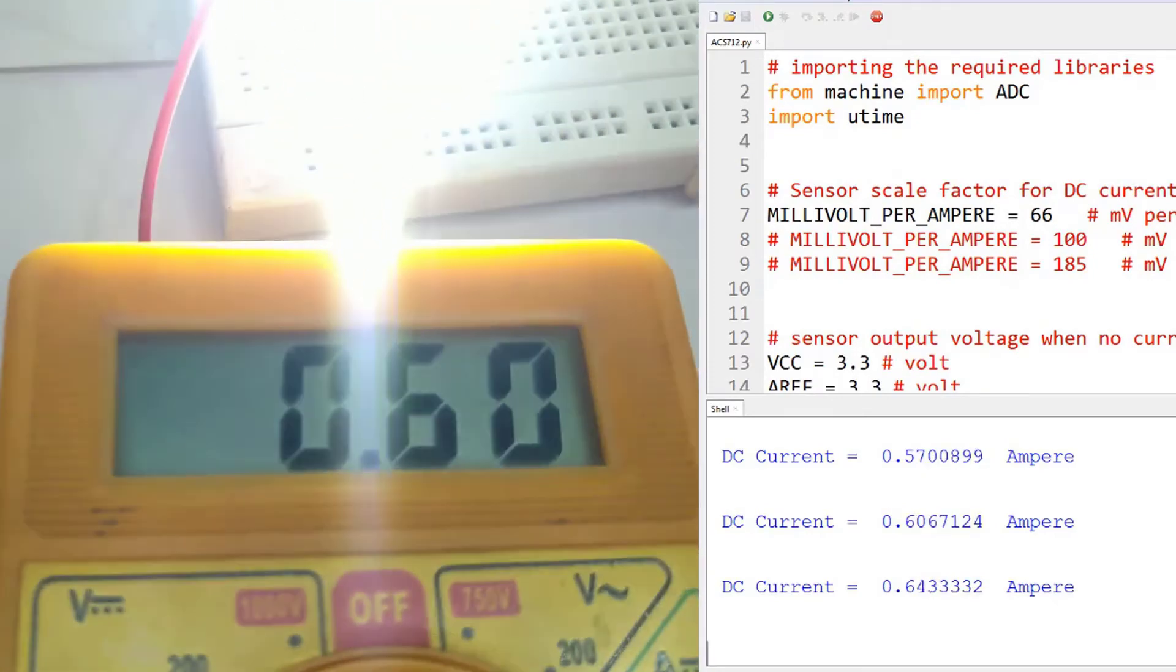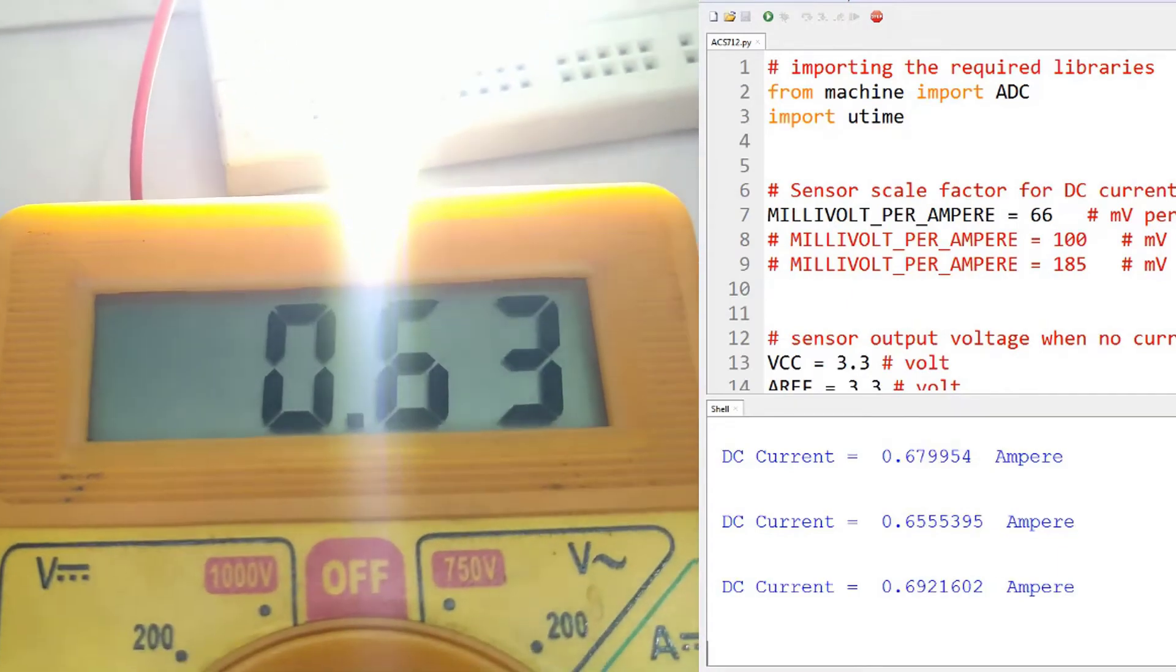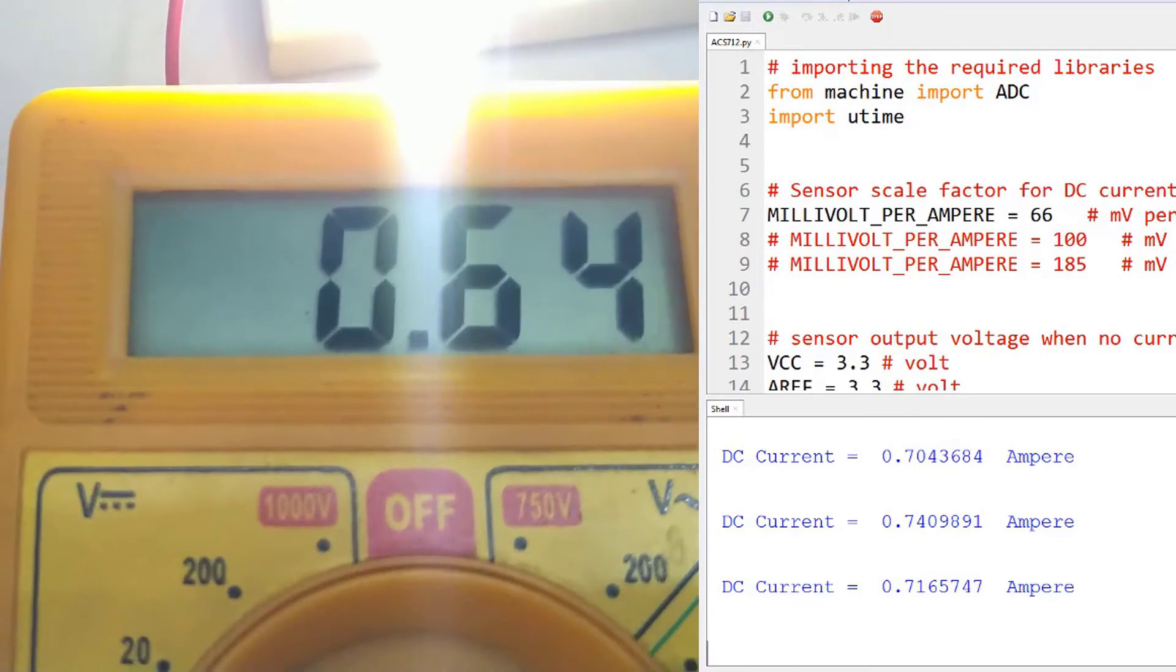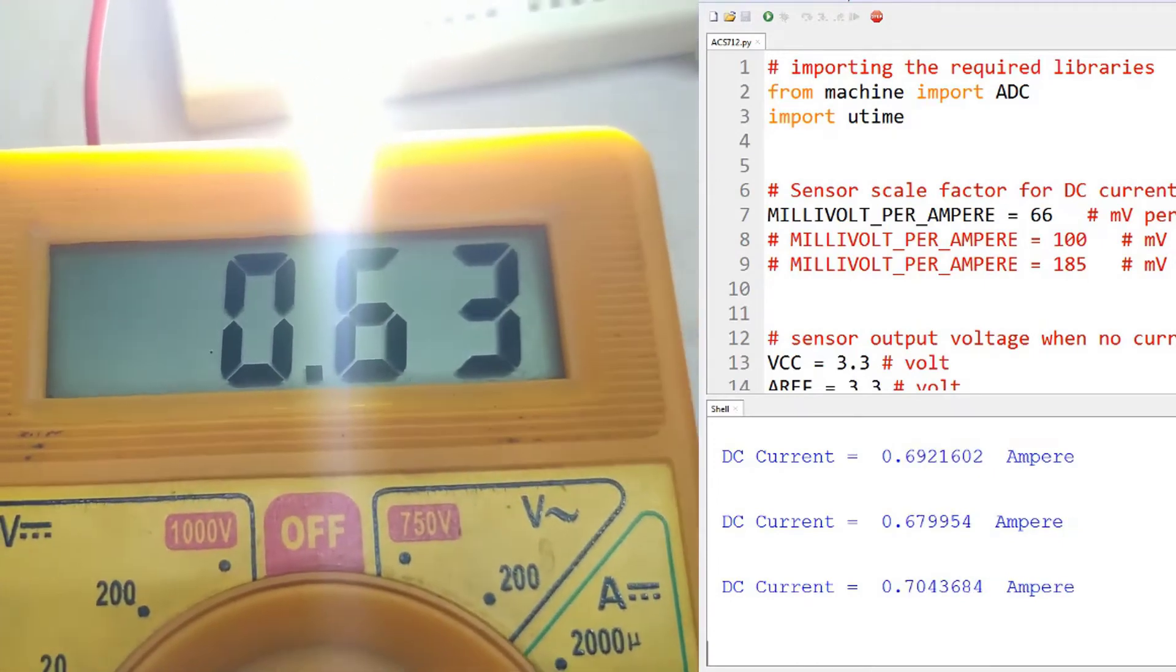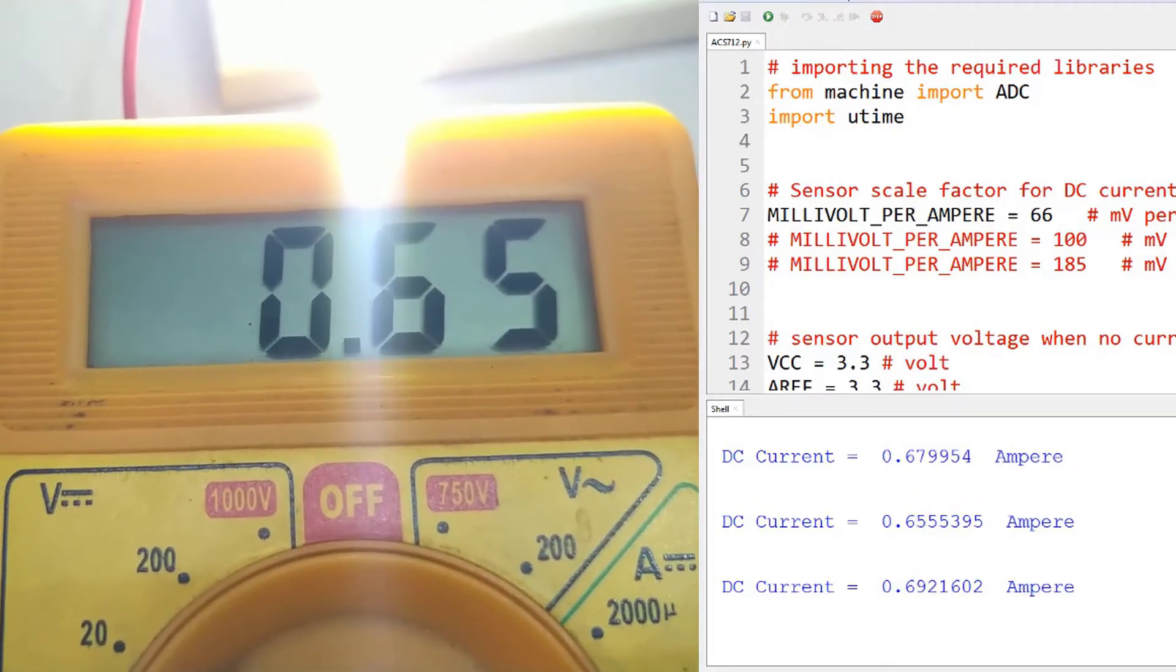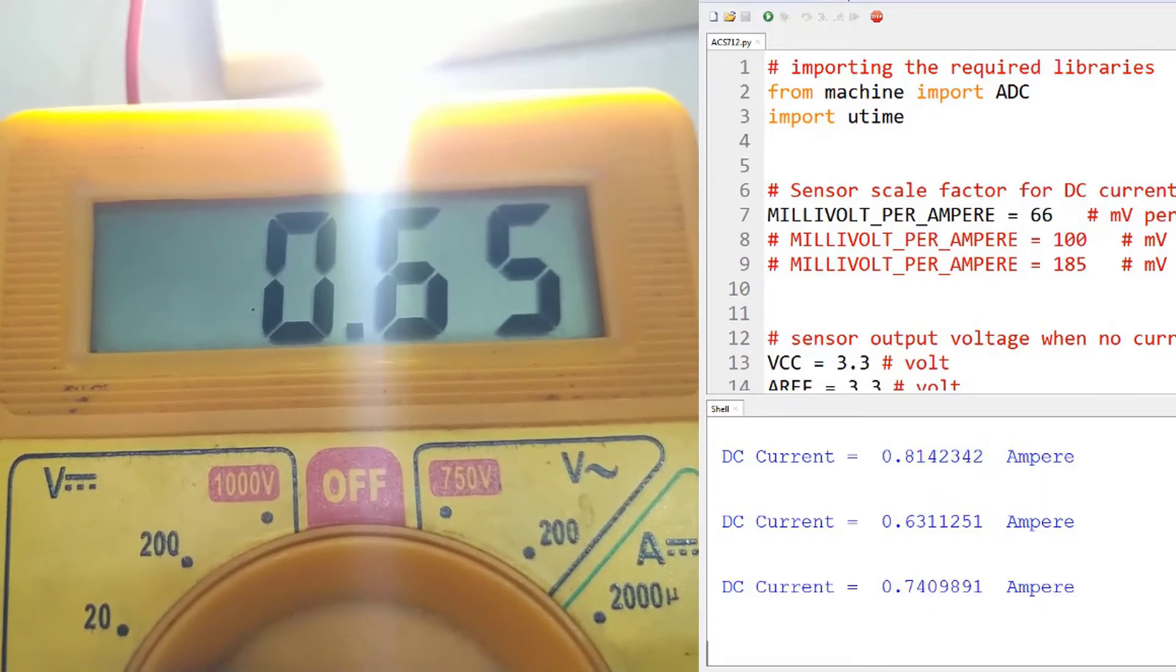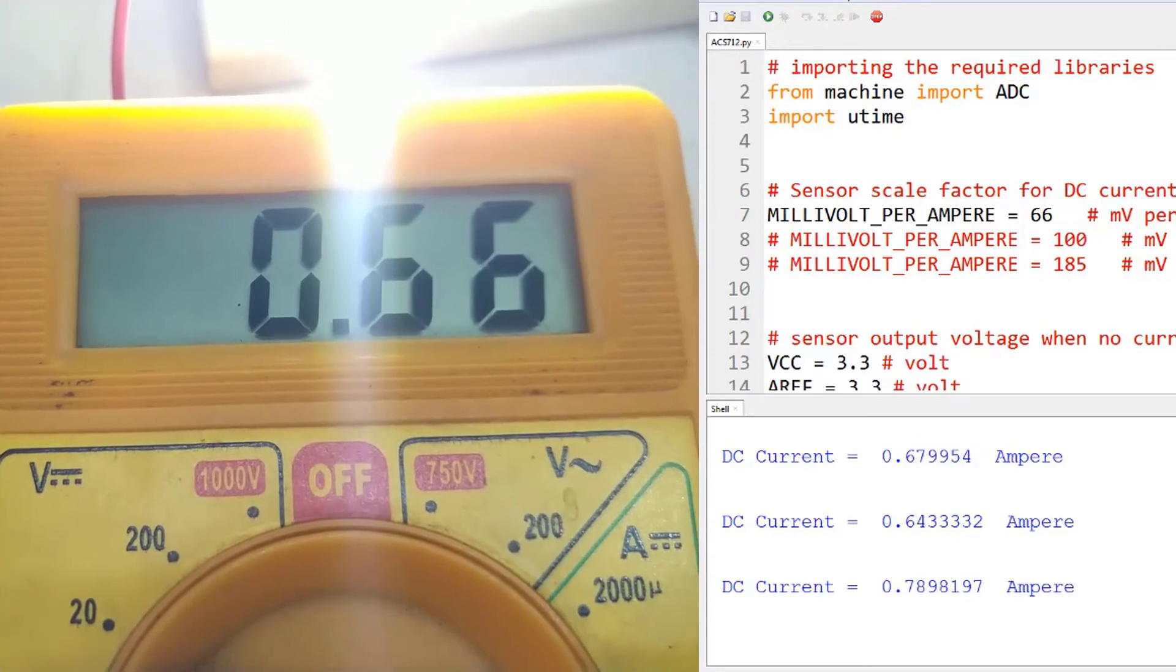Let me now focus on the multimeter. It is set to 10 ampere max so you are getting values of 0.63, 0.64 amperes and from the screen you can see that we are getting 0.67, 0.65, 0.696, 0.81, 0.63, 0.74 and these values are pretty much accurate.